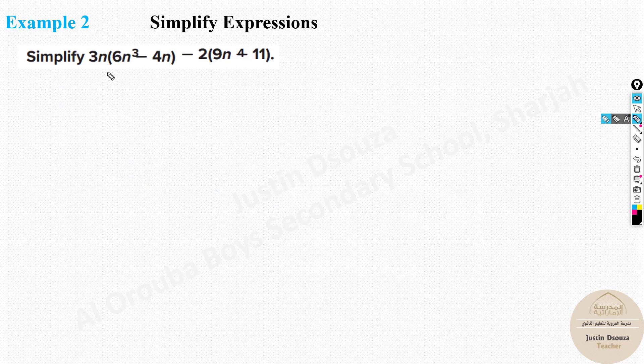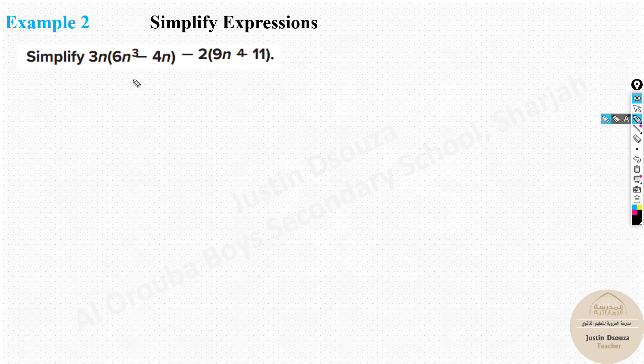Here now, another problem. You can try this by yourself. You can hit the pause button. Try it by yourself. And if you get stuck, you can listen to the explanation. Now over here, you can see there's a monomial, binomial. There is minus and then again a constant monomial and a binomial. Now what you do is, same thing. Use distributive property over here and over here and finally subtract them both.